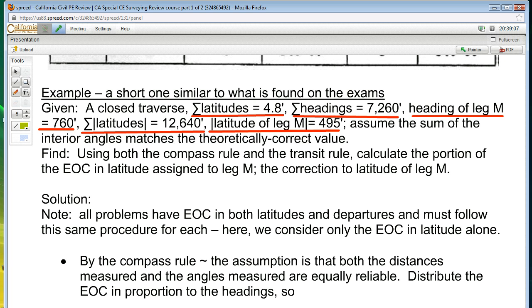Find, using both the compass rule and the transit rule, calculate the portion of the error of closure in latitude assigned to leg M and then also calculate the correction to the latitude of leg M. So this is one of those where you read it and you say, it doesn't really help me to read it. I'm still confused. It seems to have a lot of strange stuff. Well, what this is is a problem that is so concise that it becomes confusing.